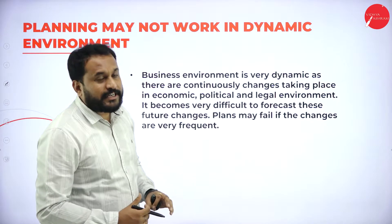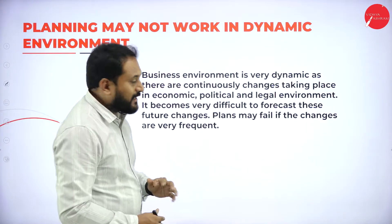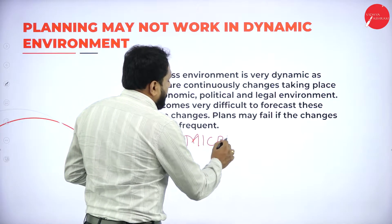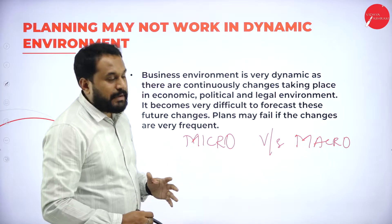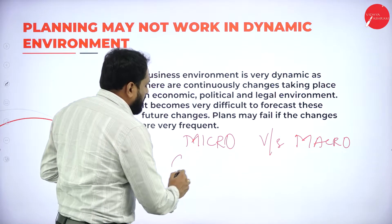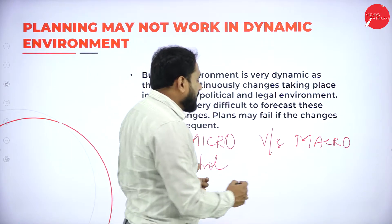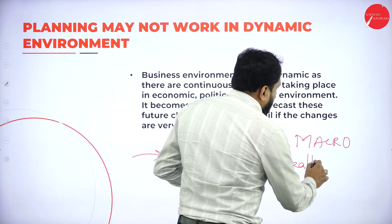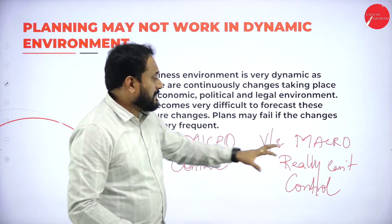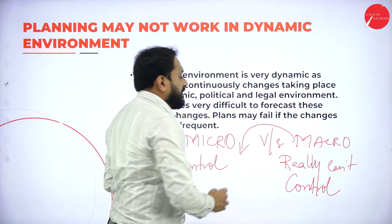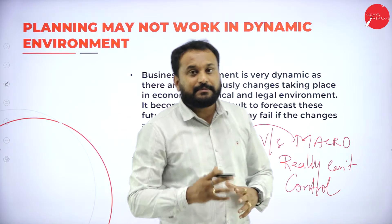Planning may not work in a dynamic environment. The dynamic nature comes from two factors: the micro environment and the macro environment. Within the company, you can control the micro environment. But outside the company — like the market — you really cannot control it. If something happens at the macro level, the micro will get affected. The company can be controlled by the boss, but if the budget or external factors say something else, the plan changes.